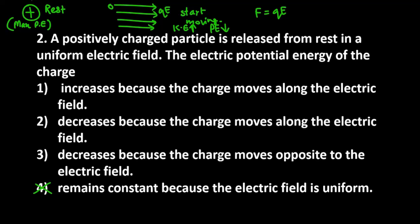When a particle is released, it moves along the electric field from higher potential to lower potential. Remember, it will always go from higher potential to lower potential. What does this mean? If it is going from higher potential to lower potential, that energy is being decreased.